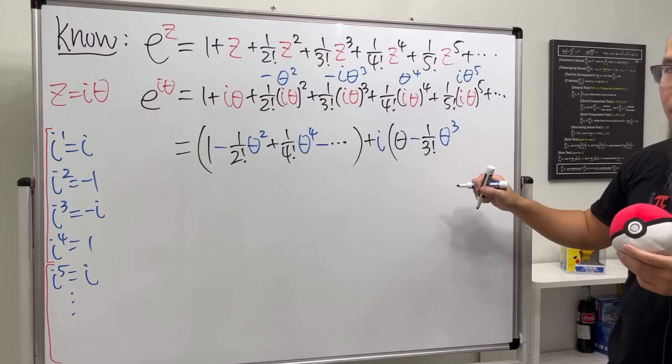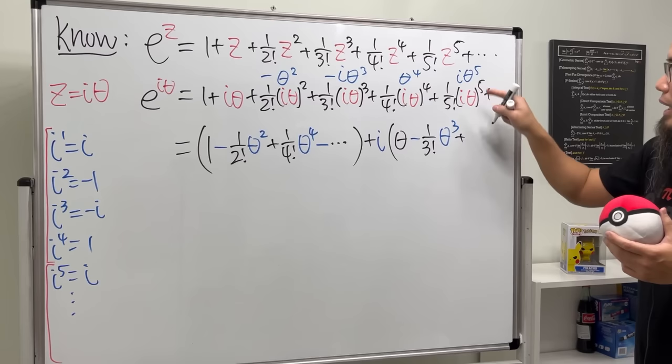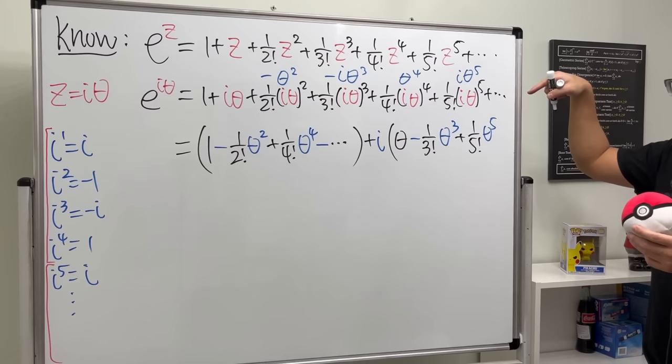And then next, it's going to be this one. It's positive. And then we have 1 over 5 factorial. Theta to the fifth power. And then the next one, it's going to be this one here. It's actually a minus.